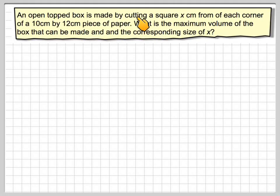An open top box is made by cutting a square x centimeters from each corner of a 10 centimeter by 12 centimeter piece of paper. What is the maximum volume of a box that can be made and the corresponding size of x?